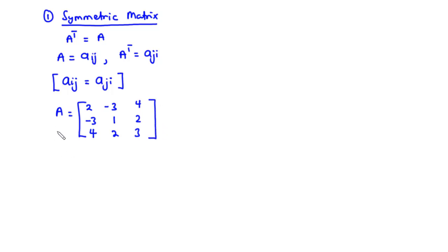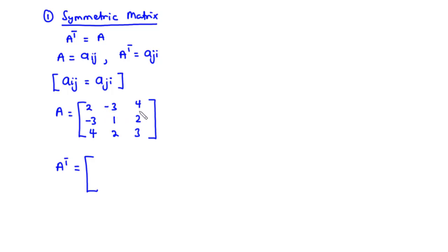For this matrix to be symmetric, the transpose of this matrix should be equal to this matrix. To find the transpose of matrix A, we interchange the rows and columns — the rows become columns and columns become rows. From row 1 we have 2, negative 3, 4, so that becomes column 1: 2, negative 3, 4.